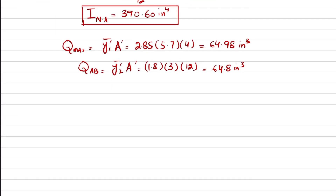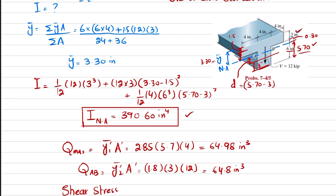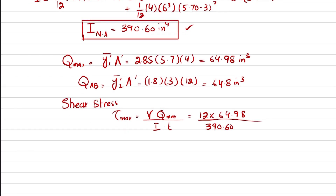Now finding the maximum shear stress: τ_max = VQ_max / (I·t). V = 12 kips, Q_max = 64.98 in³, I = 390.60 in⁴, and the web thickness t = 4 inches. Calculating: τ_max = (12 × 64.98) / (390.60 × 4) = 0.499 ksi.